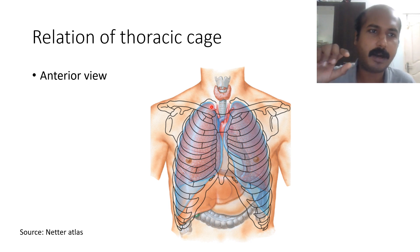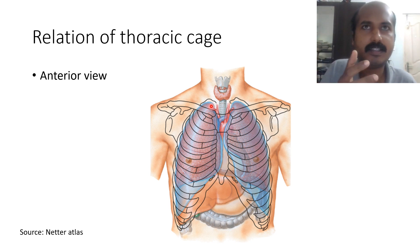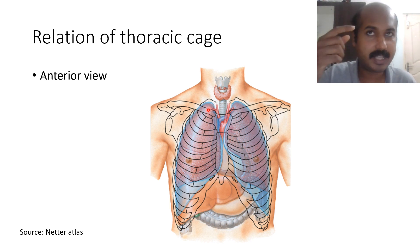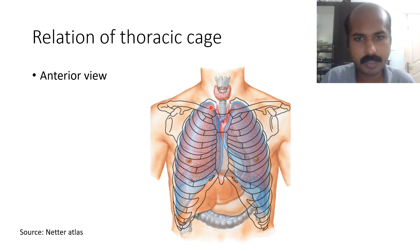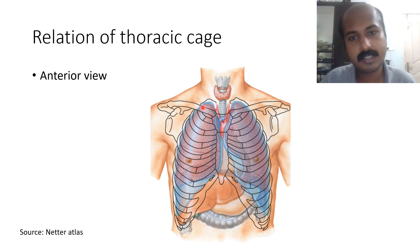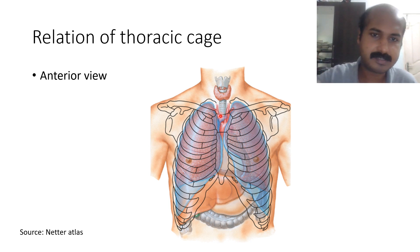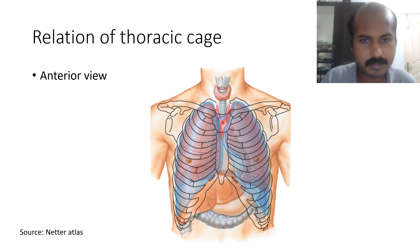The right subclavian occupies the lowermost part of the neck. You may recall the subclavian triangle or supraclavicular triangle — it contains the subclavian vein and subclavian artery. This is the point where the subclavian transiently appears in the neck, after which it enters the axilla through the cervicoaxillary canal. That is the brachiocephalic, going towards the right side.